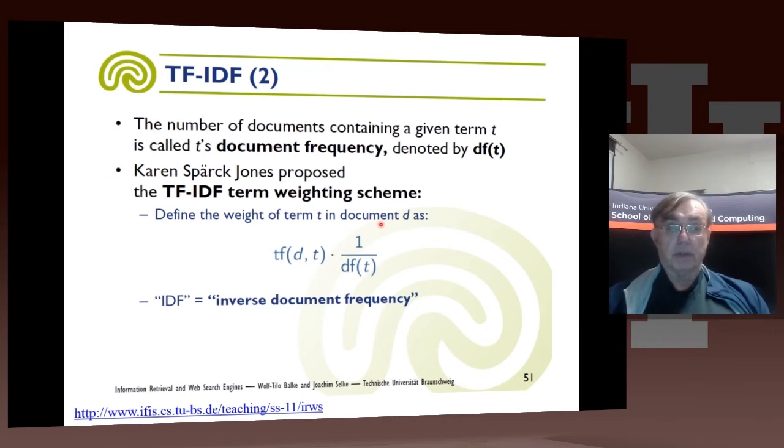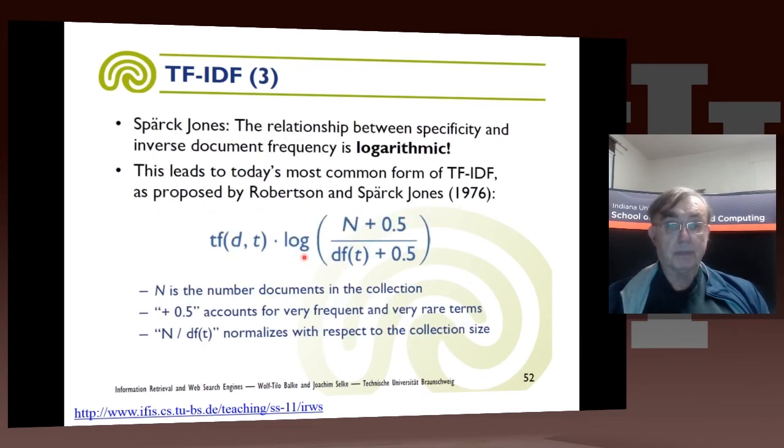And then we do something which is called tf-idf, term frequency-inverse document frequency, by taking the term frequency, the number of times the term occurs in each document, and divide it by the document frequency, the number of documents containing the term t. So this is effectively a normalized occurrence. So here we have the double number of documents containing t. And this is the number of times t occurs in my document. So this is just a more precise way of defining my vectors.